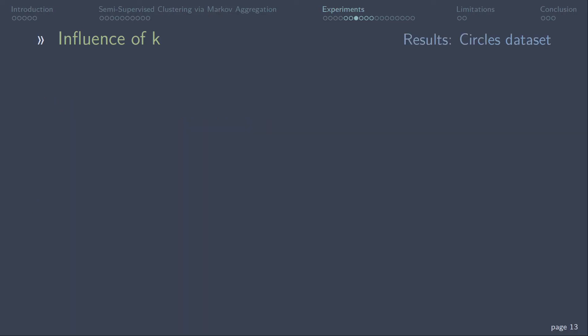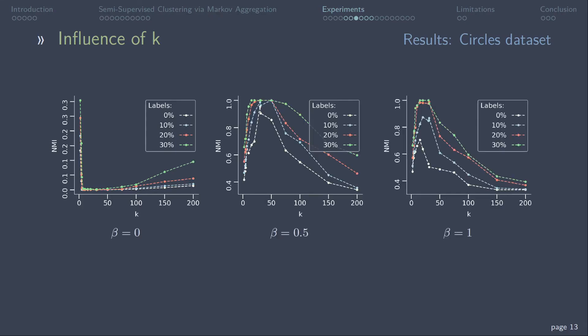Here we see the results on the circles dataset beta equal to 0, 0.5 and 1. On the one hand, we observe the drop in accuracy for small values of beta. On the other hand, the results show that the clustering performance is more robust the more pairwise constraints we include.